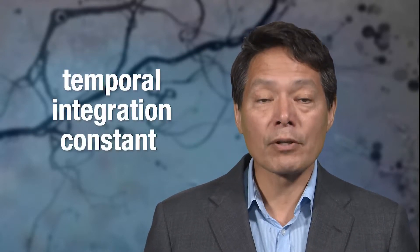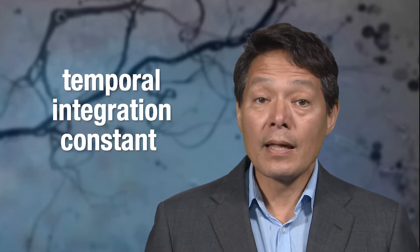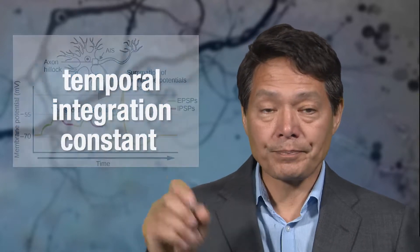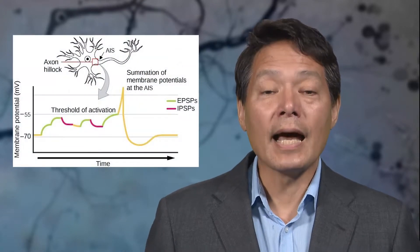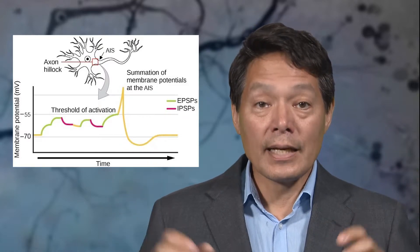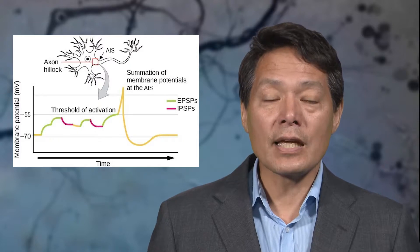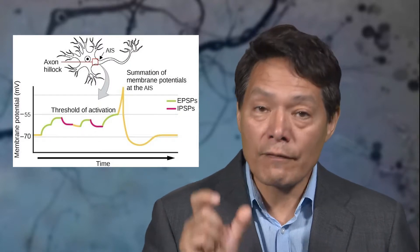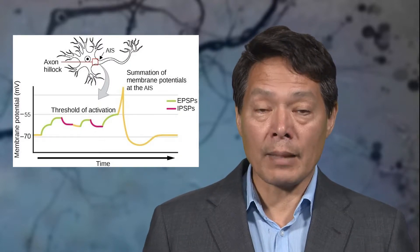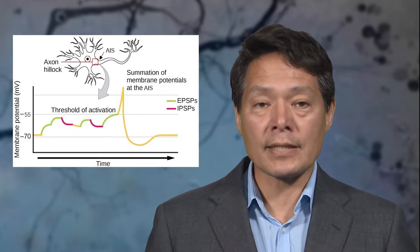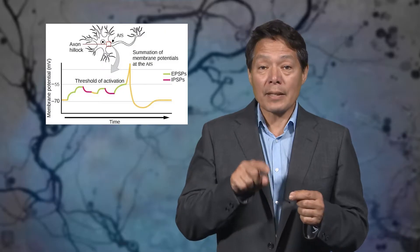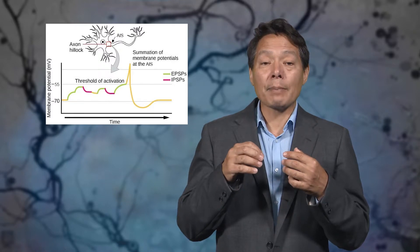However, if enough EPSPs happen, all within a relatively brief time known as the temporal integration constant of the neuron, then the EPSPs can sum up. So a neuron functions as a leaky integrator. It sums up EPSPs, but they decay away. So the EPSPs have to all arrive within a very short time window in order to add up. Otherwise, they would decay back to the baseline resting potential. Once that happens, it's as if the EPSP never happened.